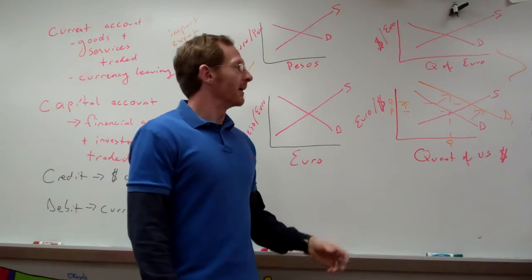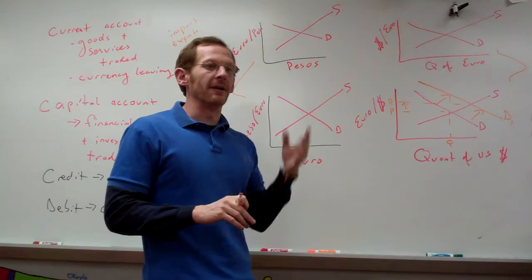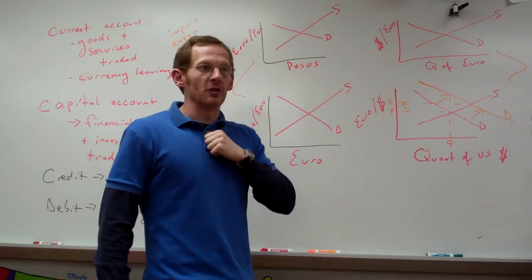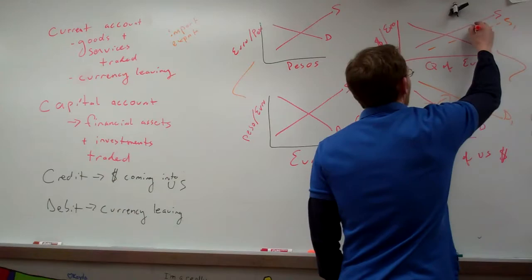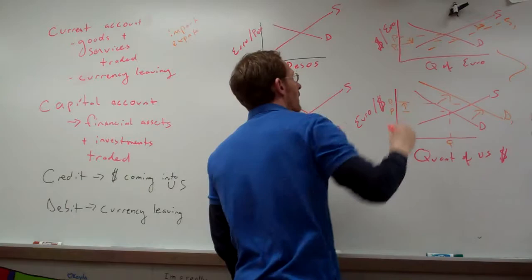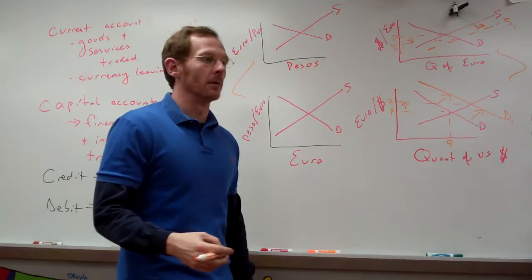Similarly, French tourists coming over and spending American dollars means they are putting euros on the foreign exchange market to get dollars. So the supply of euros on the foreign exchange market increases, and the price of euros goes down. We say that the euro has depreciated or become cheaper relative to the US dollar.